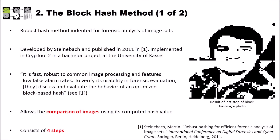Now let's have a look at the block hash method. The block hash method is a robust hash method intended for forensic analysis of image sets. For instance, if you have a database of images and want to search whether an image is stored in it, you can compute the hash value of your image, search the database for the same hash value, and find your image. The cool thing with perceptual hash functions is that even when you have a slightly modified image, you will find the original in the database. The block hash was developed by Steinebach and published in 2011.